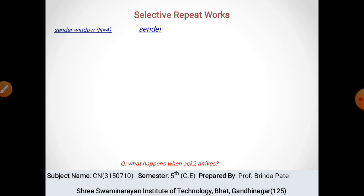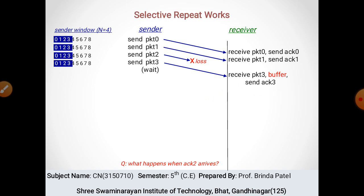यहाँ पर हम देख लेते हैं कि sender window में n = 4 है यानि window size 4 है। यहाँ sender है और यहाँ receiver है। 0 से 8 packets में से 4 packets — 0, 1, 2, 3 — send हुए हैं। Receiver को packet 0 मिला, उसने acknowledgement भेज दिया। अब 4 packets हैं और second packet — packet 2 — lost हो गया।